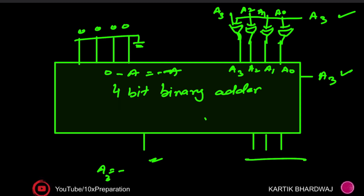At the output ports, you get the absolute value of A. And if the number is positive, putting zero at that end gives zero plus A, which equals A only. So this is the circuit you can use to calculate the absolute value. Hope you understand — it's quite an easy problem. See you in the next video.